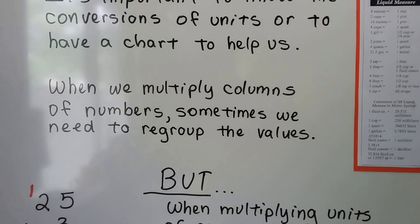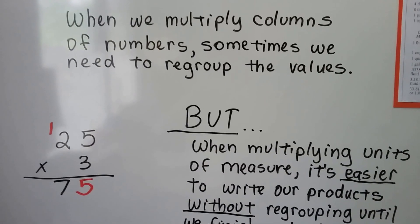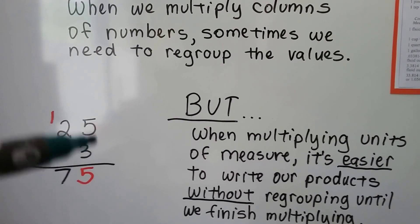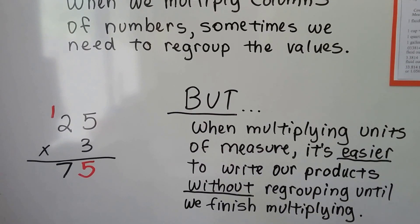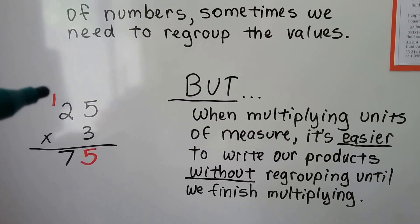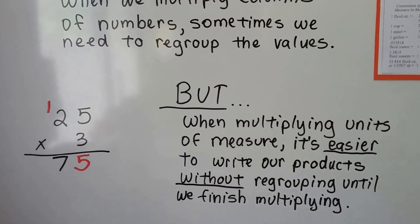When we multiply columns of numbers, sometimes we need to regroup the values. If we multiply 25 times 3, we multiply the 3 times 5, we get 15, we regroup the 10 over to the tens column and put the 5 down. Then we do 3 times 2 is 6, plus that 1 is 7, we get 75. You know, like 3 quarters is 75 cents.